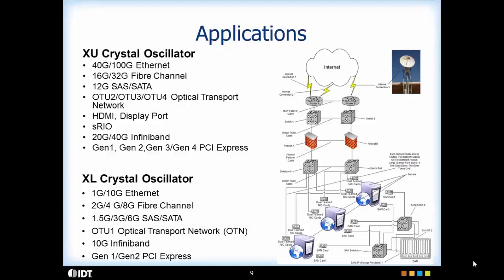The primary applications for the differential XU and XL are networking, storage, communication, and transport systems, with the data throughput speeds being the determining factor between the XU and XL. The higher the transport speeds, the more jitter sensitive the application.